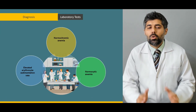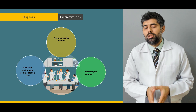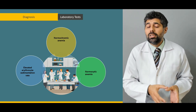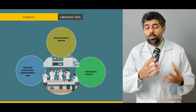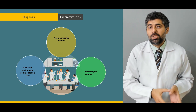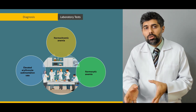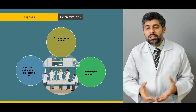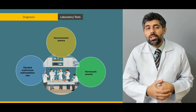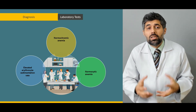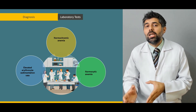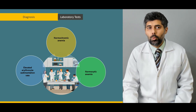Then we're going to learn about its diagnostic criteria regarding both the laboratory tests — why these typical pictures occur in these laboratory tests, why the ESR is high or low, why there's normocytic or normochromic anemia, why it occurs and why it is important in relation to this syndrome.